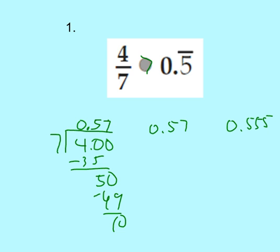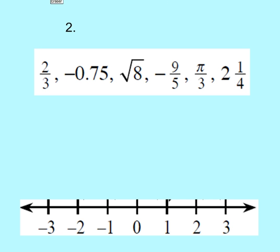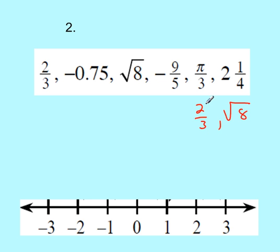Either method will work. Let's look at number two. We have a whole list of real numbers and we need to order them from least to greatest, using the number line to help sort them. Whenever I have a list of positive and negative numbers, I like to divide the list — positives on the right, negatives on the left. So my positives are: two-thirds, square root of 8, pi over 3, and 2 and 1/4.